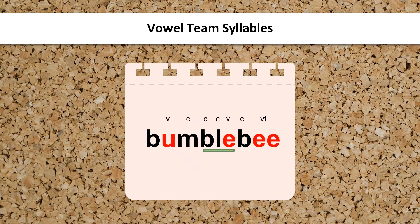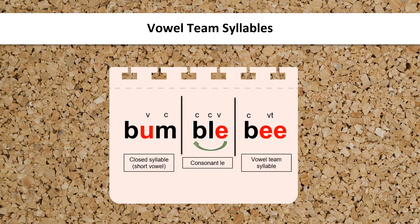While coding the consonants, I notice the consonant LE pattern. I can start with E and count back three to divide the syllable, and also divide the syllable after the consonant LE pattern. Now let's decode each syllable. Bum, bull, bee, bumblebee.